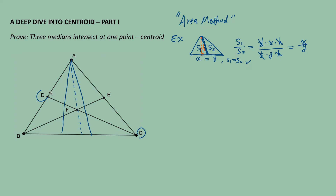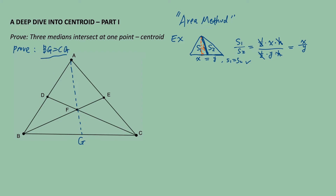Now let me simplify this diagram a little bit. In triangle ABC, we draw and extend AF toward a point G on side BC. In order to prove the three medians intersect at one point, and we already have two medians in this diagram, what we need to prove converts into this question: how can we prove that point G is the midpoint of side BC, or namely, how do we prove BG is equal to CG?